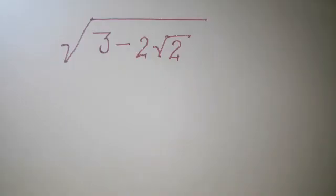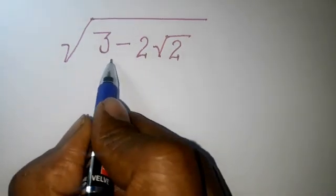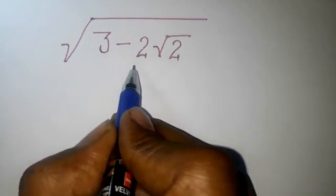Welcome back to Triple X Learning. Today we have this expression: root under 3 minus 2 root under 2. We need to find the value for it. So how can we approach this question? First, we will find out this should be a square of some quantity.